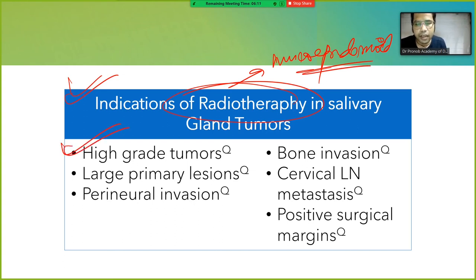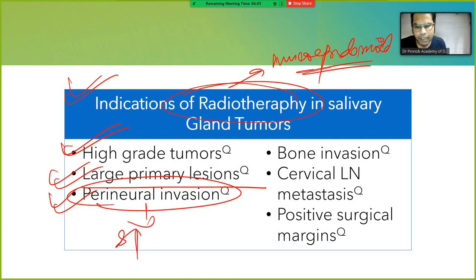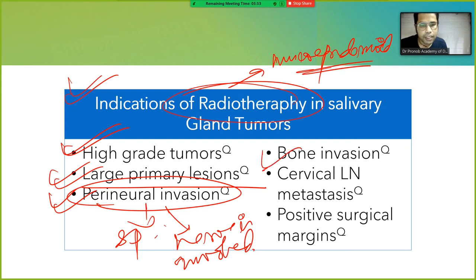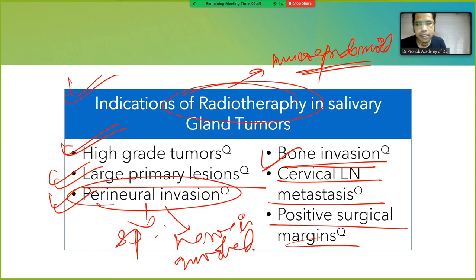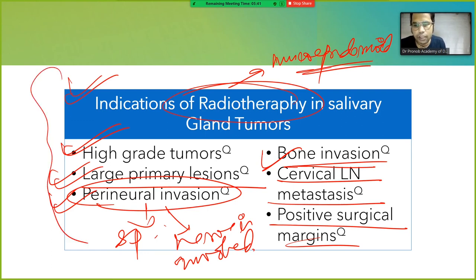Recurrence is common particularly after enucleation. Indications for radiotherapy in salivary gland tumors include high-grade tumors, large primary lesions, perineural invasion, bone invasion, cervical lymph node metastasis, and positive surgical margins.